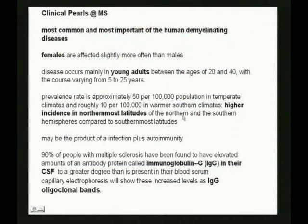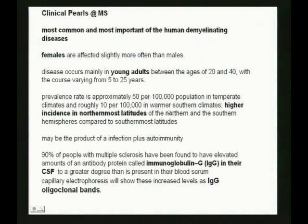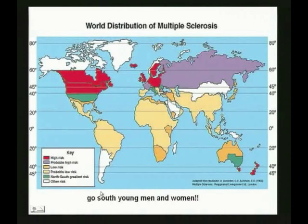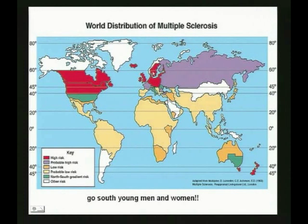Multiple sclerosis is the most common and most important of the human demyelinating diseases. Females are affected a bit more. It's a disease of young adults. The saying goes: 'go south, young man and woman' — because if you stay in the north, you have a greater chance of getting MS. On national boards, know that IgG in the CSF is elevated, and the classic finding is oligoclonal bands on electrophoresis, which are key for diagnosing MS. Scandinavia has an unusually high number of MS patients.